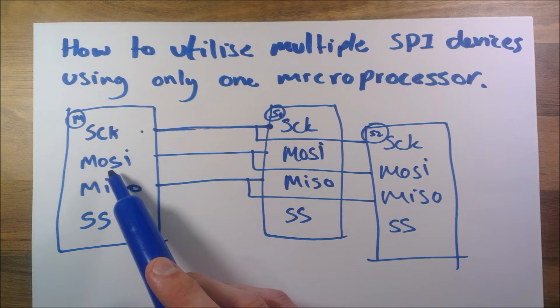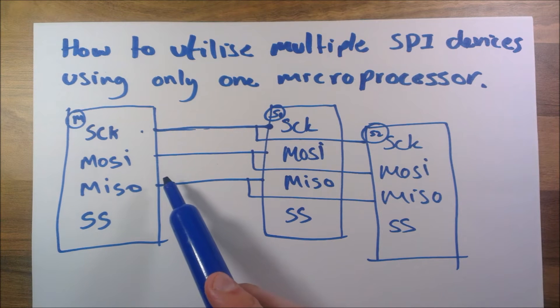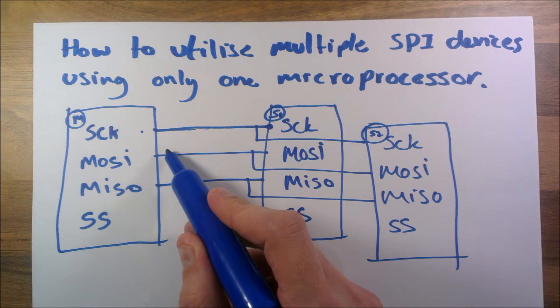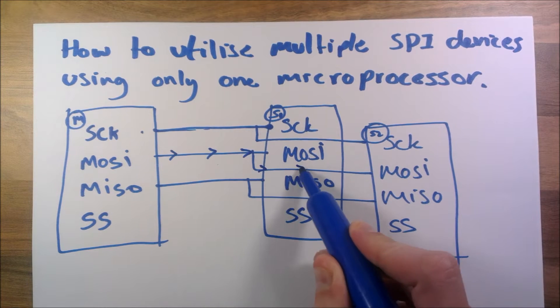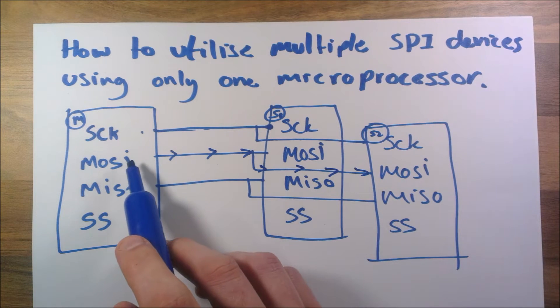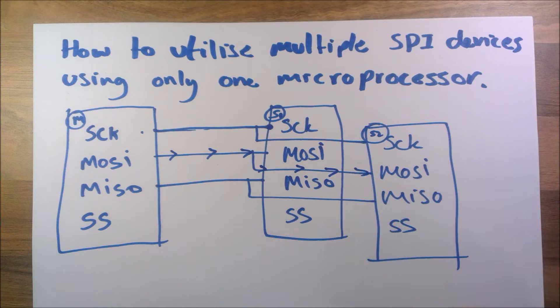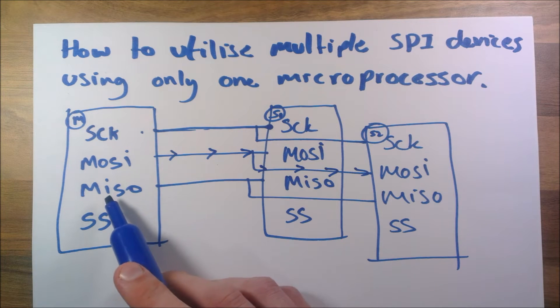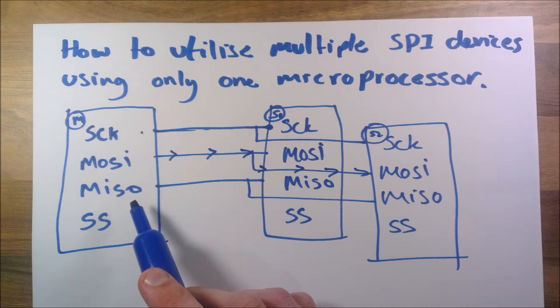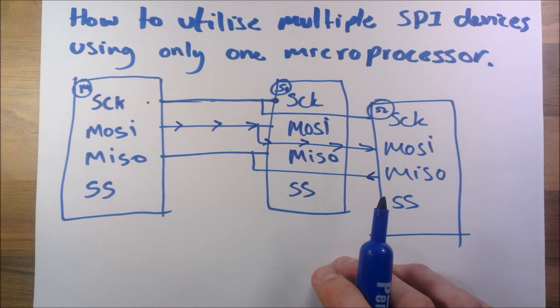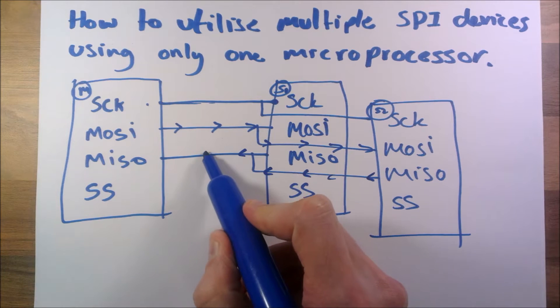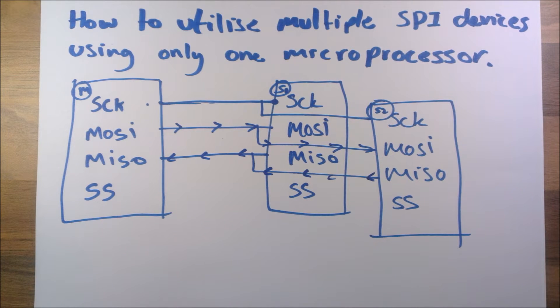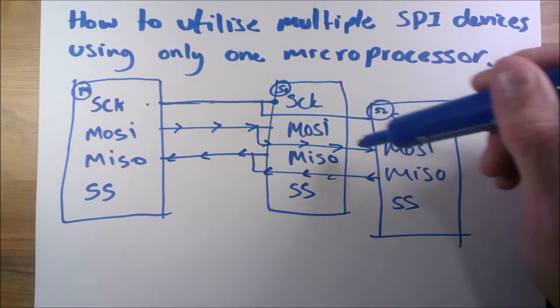MOSI stands for master out and slave in. It goes from the master down this line - this is a data line - so it goes to any devices that are listening. It's instructions from the master to the slaves. MISO is master in slave out, so that goes the other way around - data from the slaves to the master.